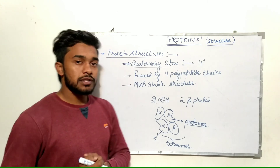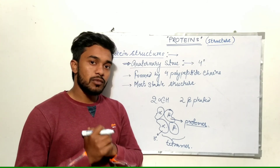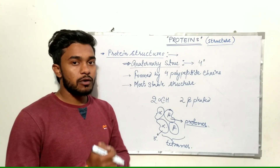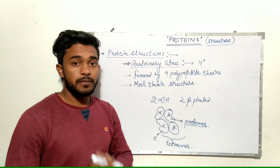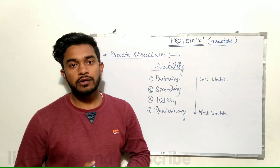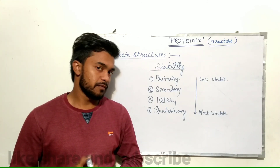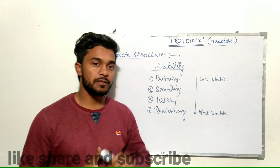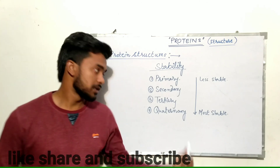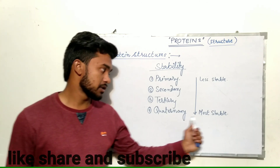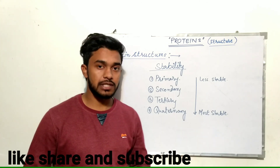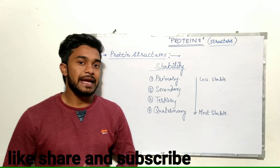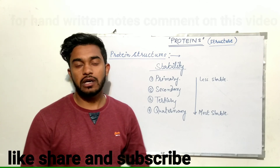Quaternary structure is the most stable structure. If we talk about the stability of proteins, primary structures are the least stable and quaternary structures are the most stable structures of protein.